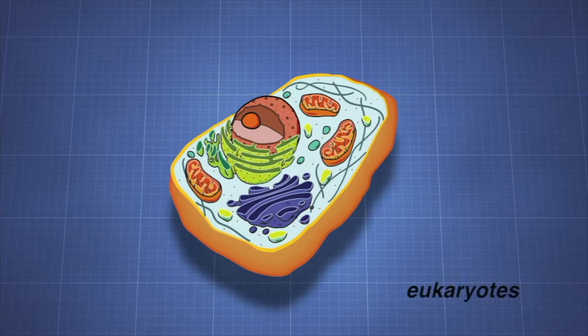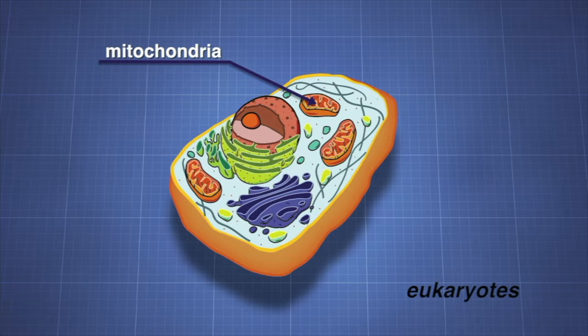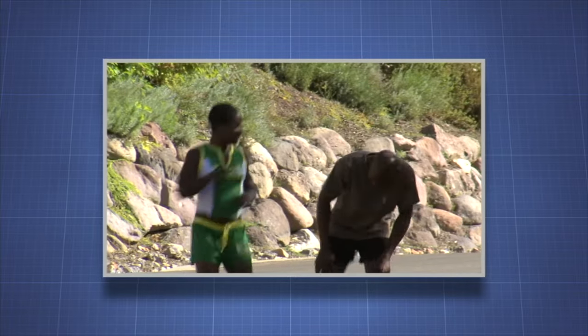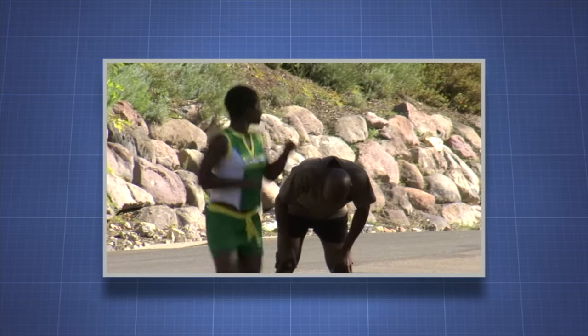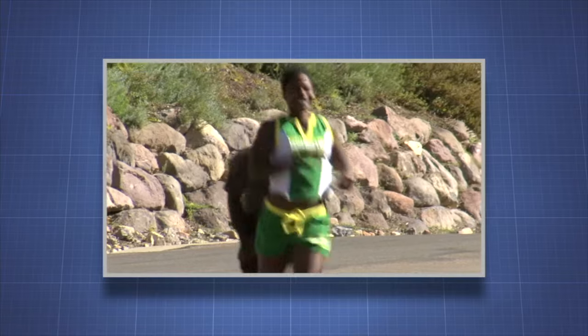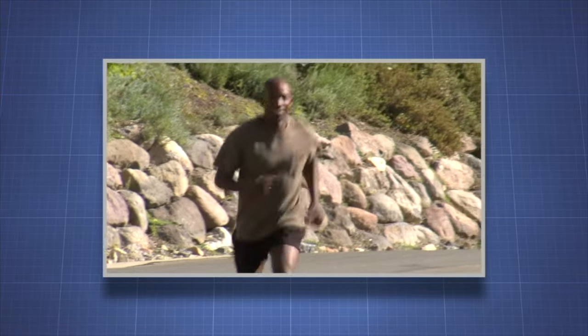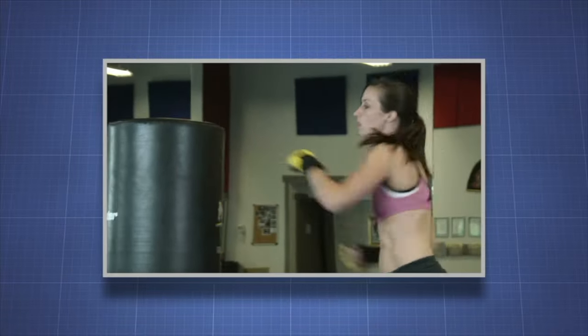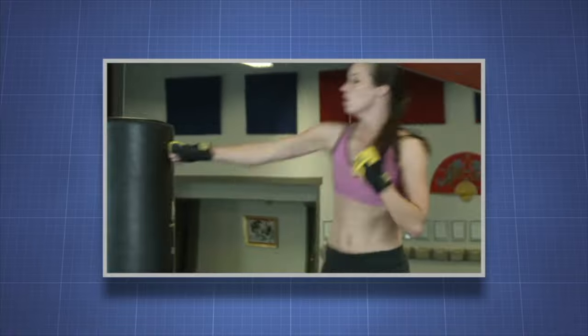In eukaryotes, this metabolic process takes place within the mitochondria of the cell. When you exercise, your breathing rate increases, because our muscles are required to do more work, which requires more ATP. More demand for ATP requires more cellular respiration, which in turn leads to more oxygen consumption and more production of carbon dioxide. To meet the demand, our breathing rate increases to draw more oxygen in and to let more CO2 out.